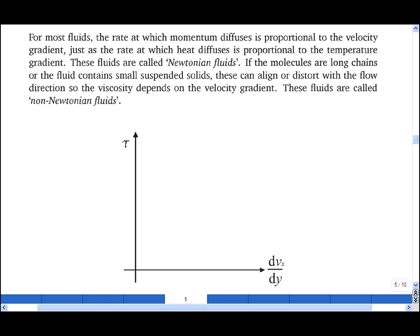For simple fluids, the rate at which momentum diffuses is proportional to the velocity gradient, just as the rate at which heat diffuses is proportional to the temperature gradient. These fluids are called Newtonian fluids, and examples include water and air.